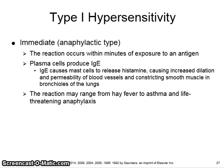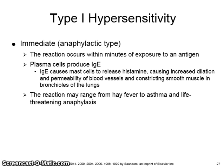Type 1 hypersensitivity is a reaction that occurs immediately within minutes after exposure to a previously encountered allergen. The plasma cells produce IgE in response to the allergen, and the IgE binds to mast cells located in tissue, causing them to release their granules containing histamine, a potential biochemical mediator of inflammation. This results in edema caused by increased dilation and permeability of blood vessels, and constriction of smooth muscles in the bronchioles of the lungs. A Type 1 reaction may range from hay fever to asthma to life-threatening anaphylaxis.